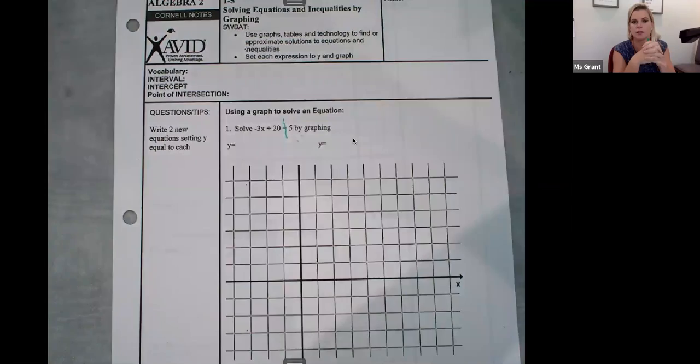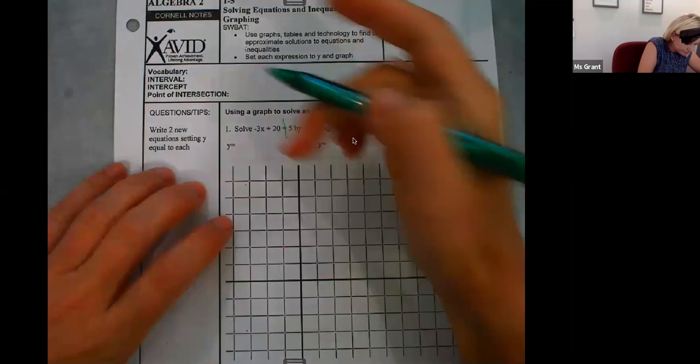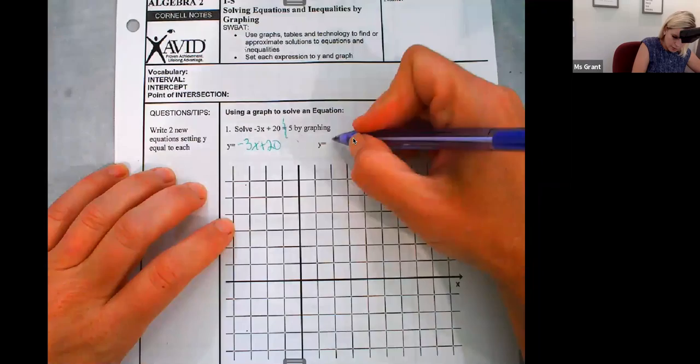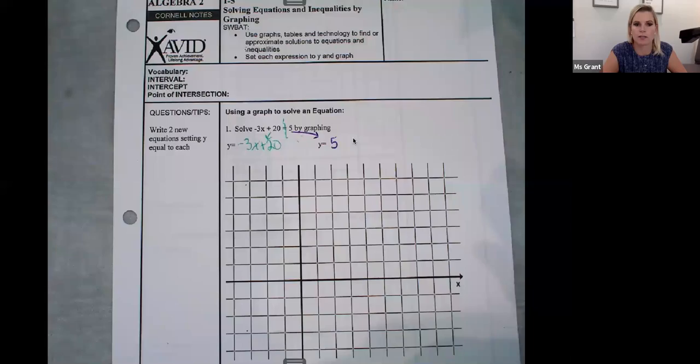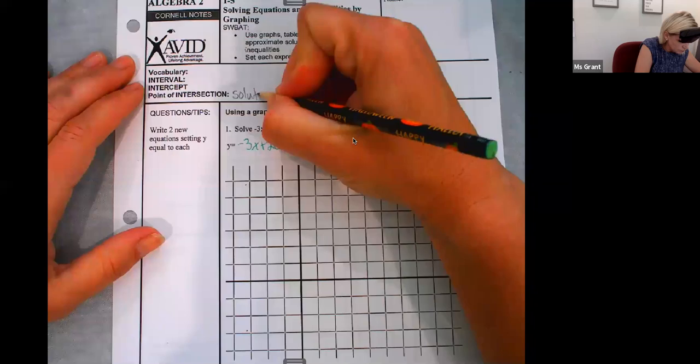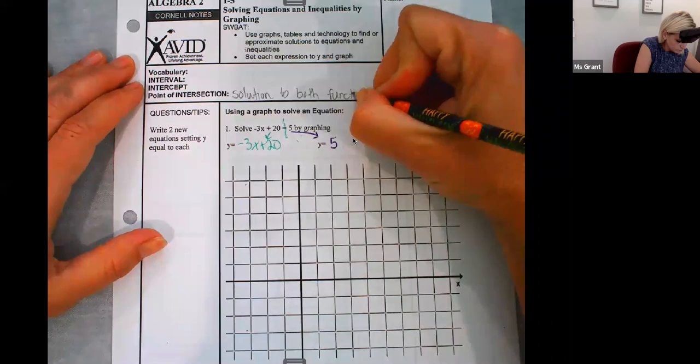The equal sign is going to be the separation and I'm making two functions because I want to figure out where they intersect. Where the left side negative 3x plus 20, and where y equals the right side is just five. I'm going to graph two separate equations. The point of intersection is going to be the solution to both functions.